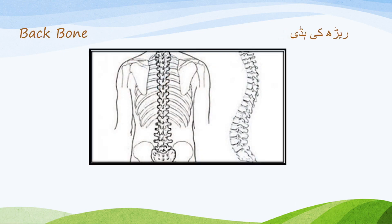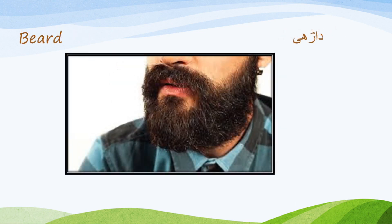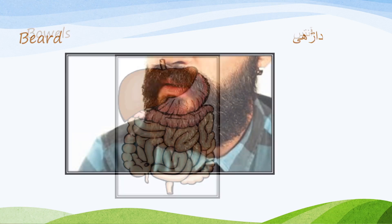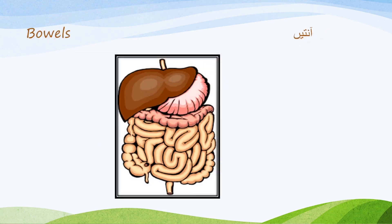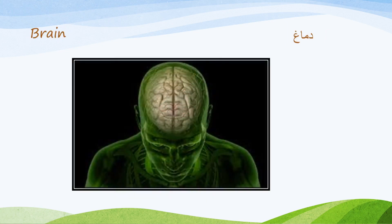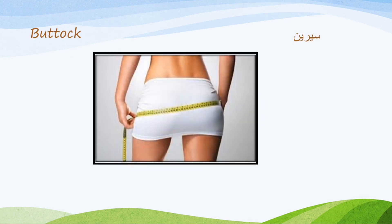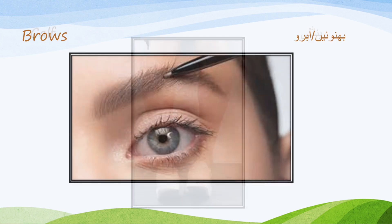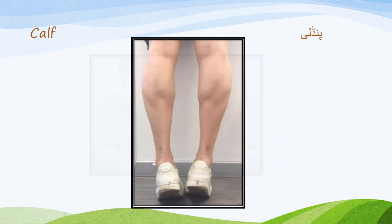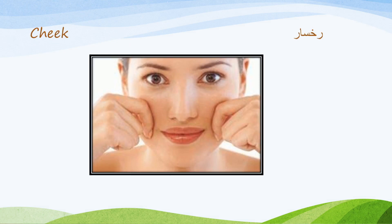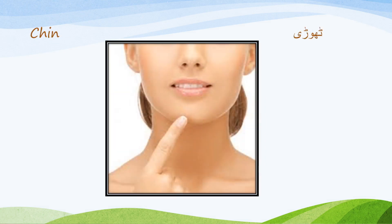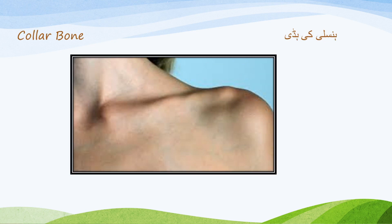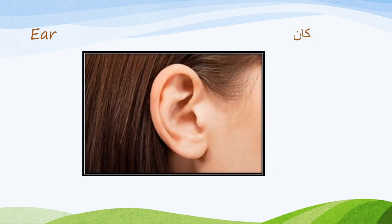Backbone — Rear ki huddi. Beard — Dari. Bowels — Ante. Brain — Dimaag. Buttock — Serene. Brow — Bhavya abru. Calf — Pindli. Cheek — Rukhsar. Chin — Thodi. Collar bone — Hansli ki huddi. Ear — Kaan.